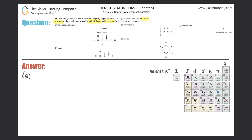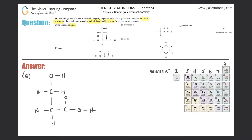Let's get started. A is the amino acid serine. So I'm going to write this out quickly. They gave us an oxygen bound to a carbon with two hydrogens, a carbon with a nitrogen down here, a carbon that has an oxygen and a hydrogen, then another oxygen up here, and then a nitrogen with two hydrogens. The elements here are oxygen, hydrogen, carbon, and nitrogen. Carbon should have four valence electrons, nitrogen should have five, oxygen should have six, and hydrogen should have one.